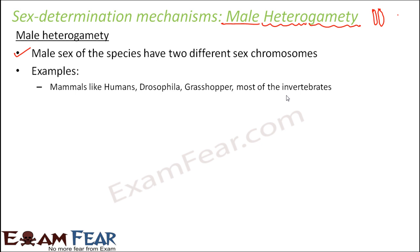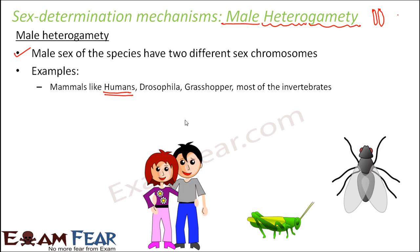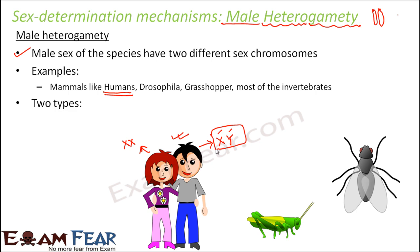In human beings, males have sex chromosomes X and Y, which are different from each other — so males show male heterogamity. But females have sex chromosomes XX, meaning both are identical, so females do not show heterogamity. Based on the type of male heterogamity seen, organisms are broadly classified into two types: one is XY type, which is seen in human beings, and the other is X-O type.